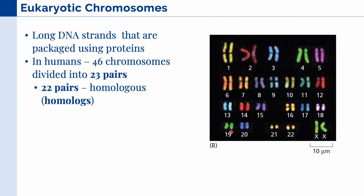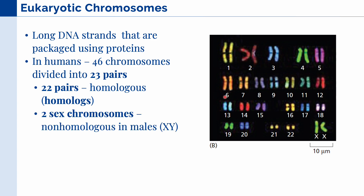22 of those pairs are what we call homologous pairs or homologs of each other, meaning they are functionally the same, but there may be some slight differences in their nucleotide sequences, and those are numbered from 1 to 22. Aside from this, we also have two sex chromosomes, which are non-homologous in males, meaning they are dissimilar, X and Y. In females, though, our two sex chromosomes are homologous, X and X.